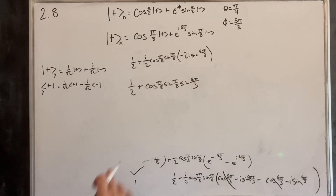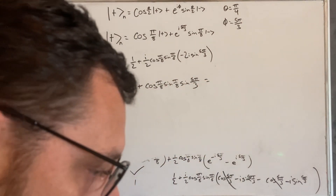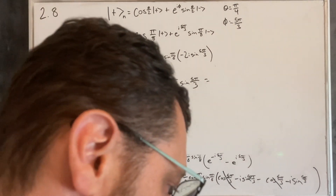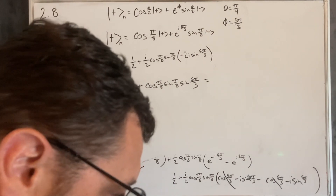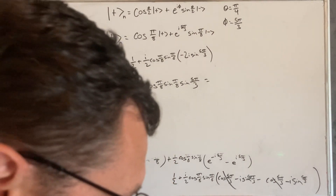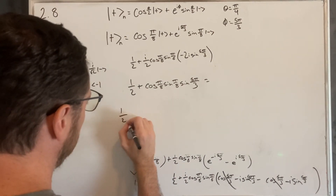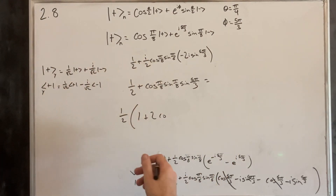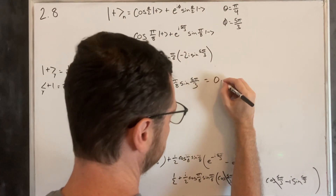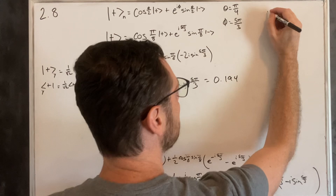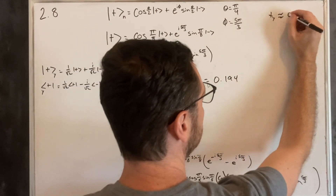If you plug this into your calculator, you get approximately 0.194. So the probability of getting up in the y-direction is about 0.194. Now we need to do down. So we're computing the probability of down in y given up in n.